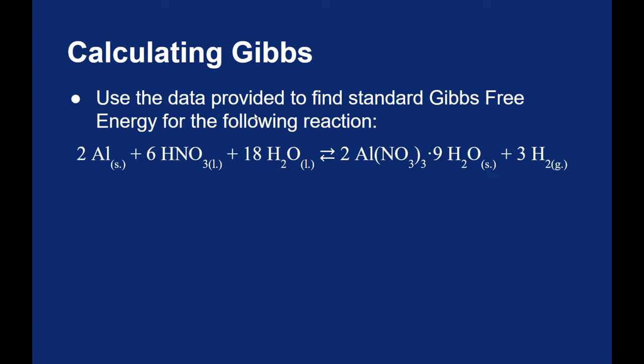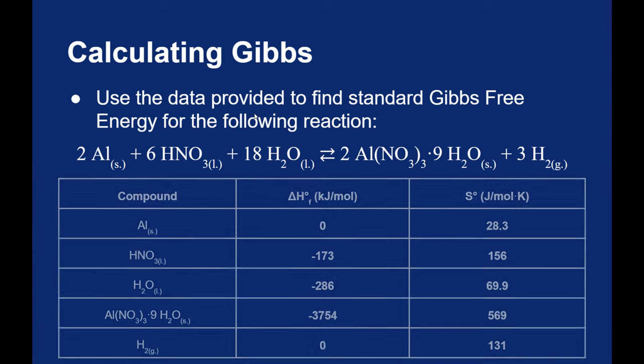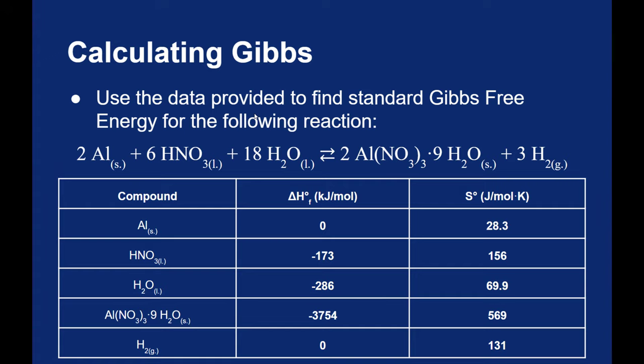Now in order to do this we need a bunch of information. Here is a table with all of the elements and compounds we find in our equation. Here are their heats of formation and here are their entropies all under standard conditions. We're going to use this information to find the delta G for this process.